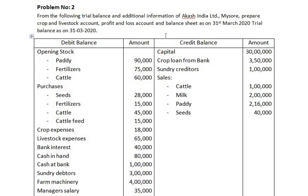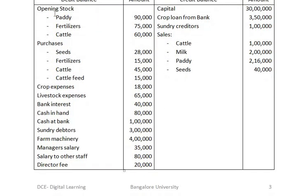Let us look at the next problem. From the following trial balance and additional information of Carr Thugs India Limited, prepare crop and livestock account, profit and loss account, and balance sheet as on 31st March 2020. Opening stock has to be debited to the crop and livestock account. Purchases have to be debited to the crop and livestock account. Crop expenses have to be debited to the crop account, livestock expenses to the livestock account, and bank interest to be debited to the profit and loss account.